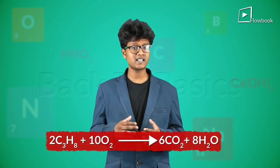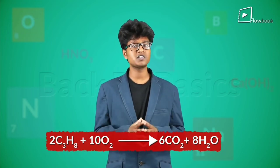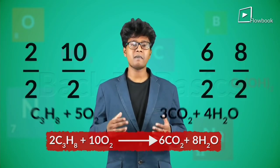For example, if 2 C3H8 plus 10 O2 gives rise to 6 CO2 plus 8 H2O, then it is not a balanced chemical equation where the coefficients are of a least whole number value. So to make it a balanced equation, you can simply divide it by 2 and obtain the balanced chemical equation.